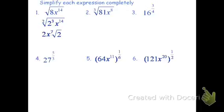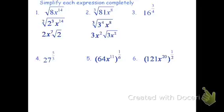For the next one, I rewrite 81 inside the radical using exponents. Using a factor tree: 81 is 9 times 9, and each 9 is 3 times 3, so 81 is 3 to the 4th power. Using my rules, I divide the index into the exponents: 3 goes into 4 once, so I have 3 to the 1 outside, still with a cube root of 3 left over. Then 3 goes into 8 twice with 2 left over, so the answer is 3x squared times the 3rd root of 3x squared.